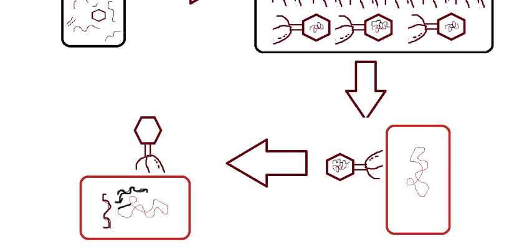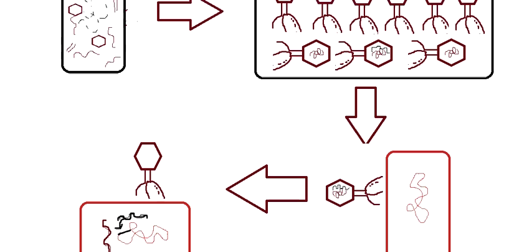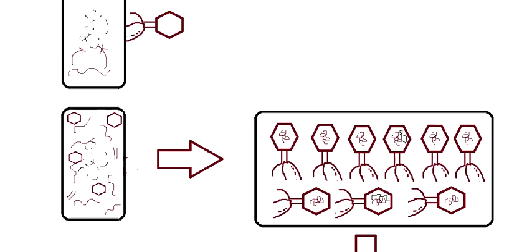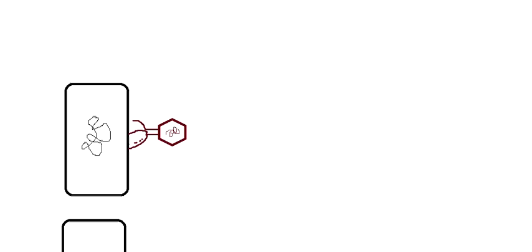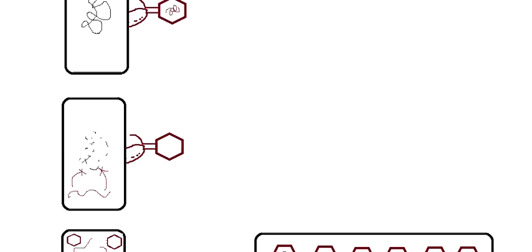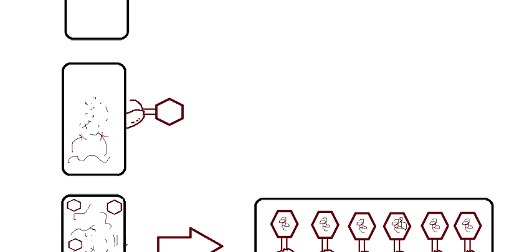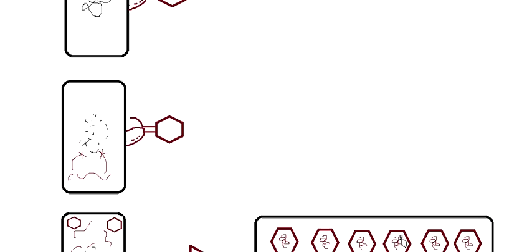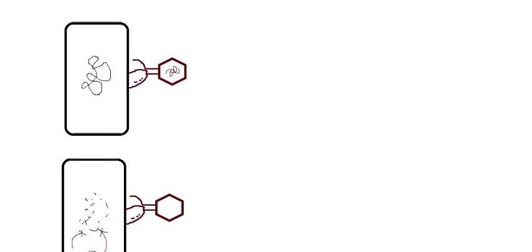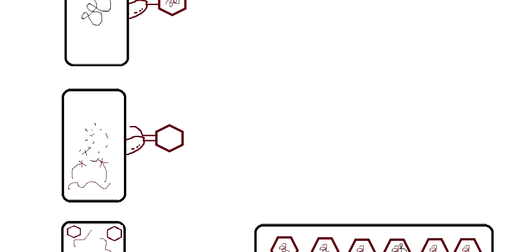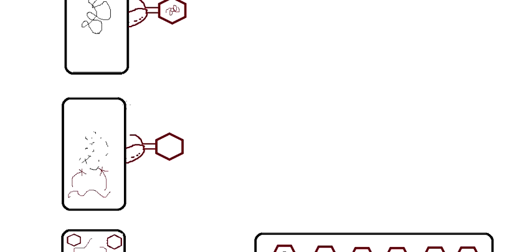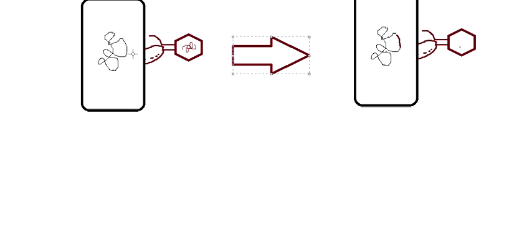That is the general mechanism of transduction — this is generalized transduction, based on the lytic cycle where the viral genetic material enters the bacterial cell and destroys it without combining with the bacterial genome. However, if the viral DNA does combine with the bacterial genome, another variety of transduction can occur.